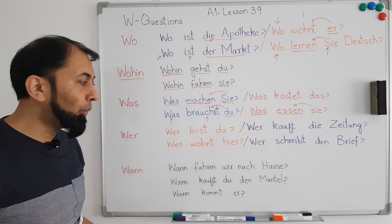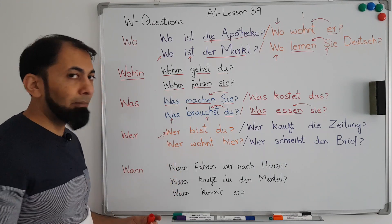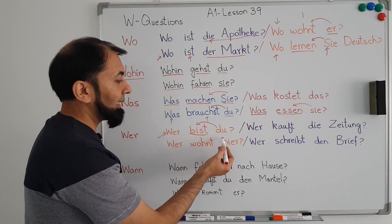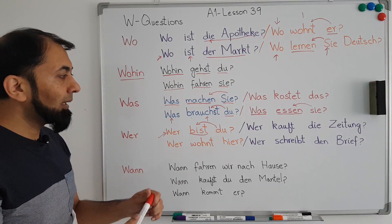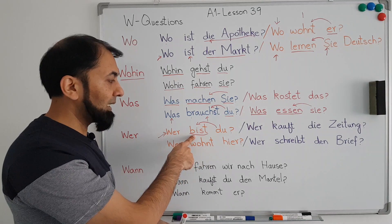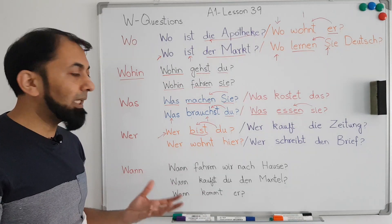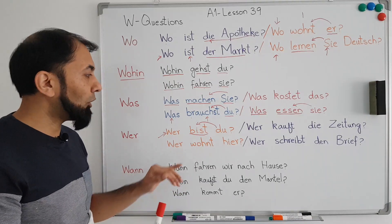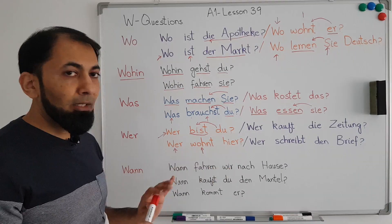The next W-question word is 'wer', which means 'who'. For example: 'Wer bist du?' means 'Who are you?' The W-question word comes at the first position, the verb 'sein' is conjugated with respect to the subject 'du' at the third position, giving 'bist'. If you want to say 'Who are you?' in the second person formal, it becomes 'Wer sind Sie?' — 'sind' being the conjugation of 'sein' for 'Sie'. Next: 'Wer wohnt hier?' means 'Who lives here?'